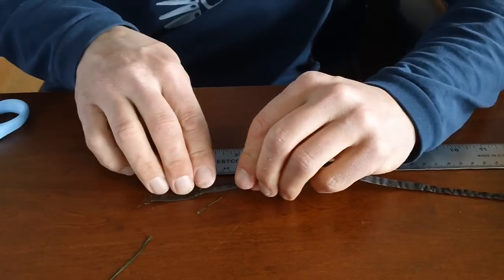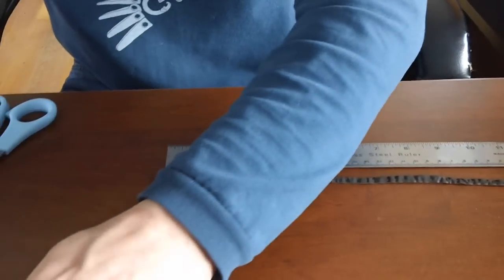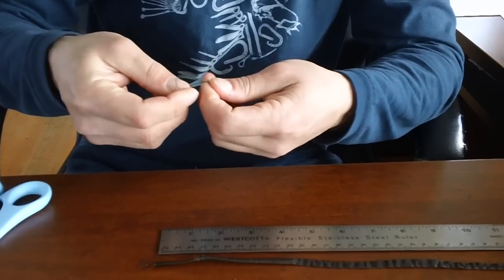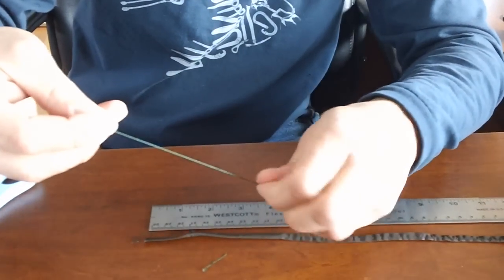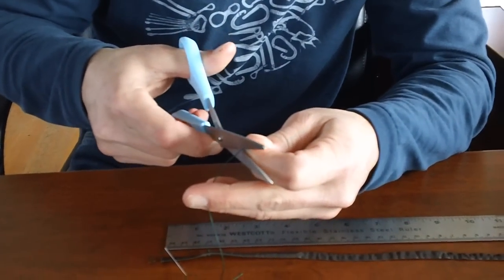Trim off the edge. So now here, get your thread ready because you're going to need it right away. Again, I'm just putting an overhand knot in the doubled over upholstery thread. Trim off the excess.